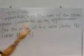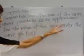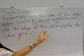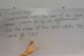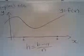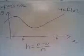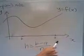Simpson's rule uses the sum of the area under parabolas as an approximation for the value of the area under the curve y. To find the area under the curve y equals f of x between x equals a and x equals b,